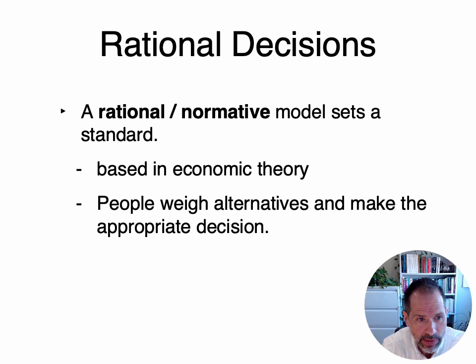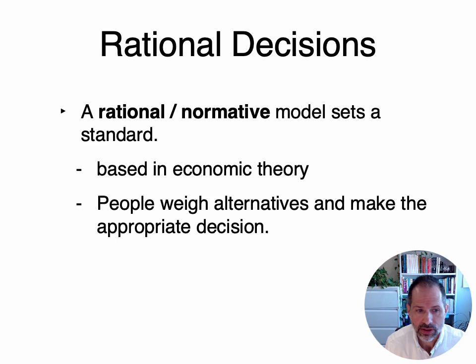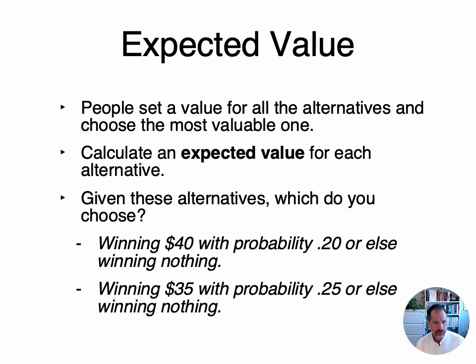The idea that we make rational decisions comes from behavioral economics. A rational decision is one that maximizes the benefit for us, minimizes the cost, and reduces uncertainty. The idea is that we weigh the alternatives and make the appropriate decision. Starting with this rational model, we assume that people set a value for all of the alternatives and choose the most valuable one. Let's use some really simplified examples — maybe like bets or gambles.